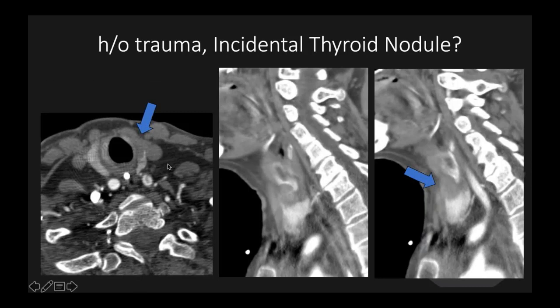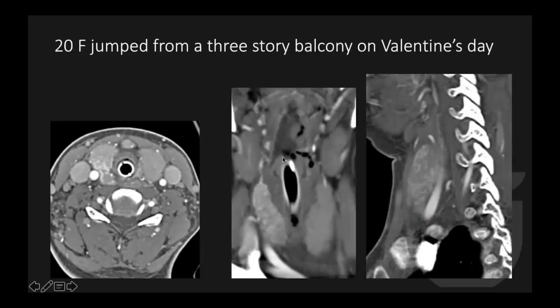Another trauma patient on CTA head and neck showed a hypodense lesion in the anterior left thyroid gland. But looking carefully, the patient had a dissection flap in the common carotid artery extending to the external carotid artery, which occluded the superior thyroid artery. So this is an infarction of the thyroid gland from superior thyroid artery occlusion — it can mimic a thyroid nodule.